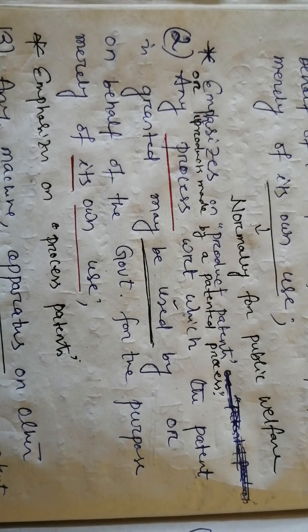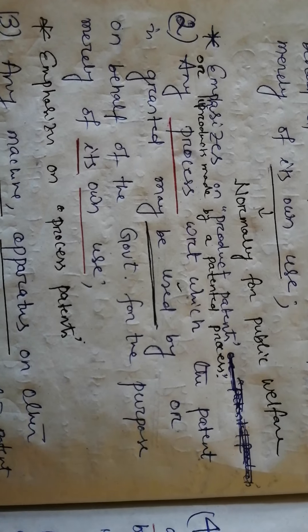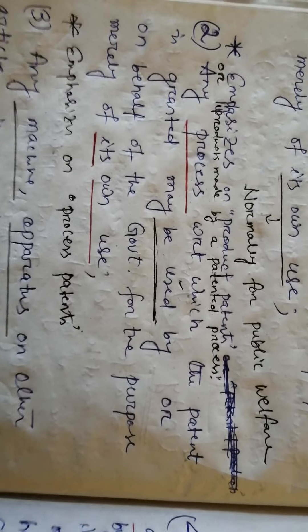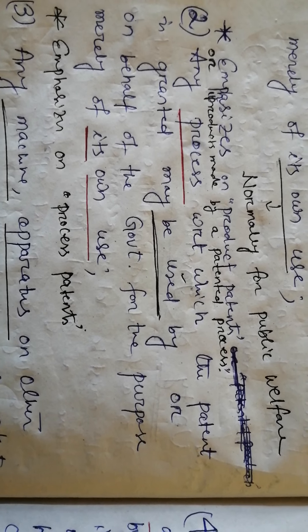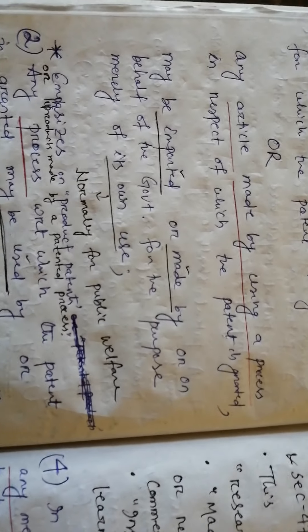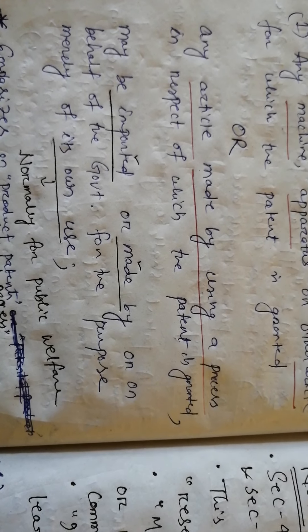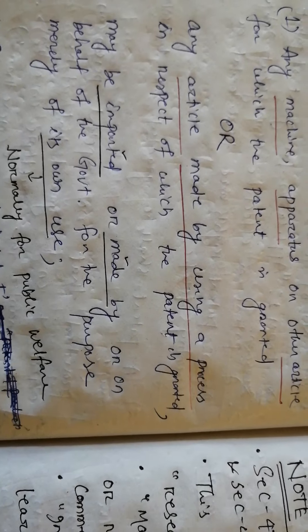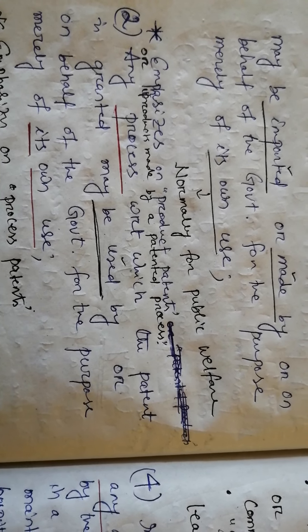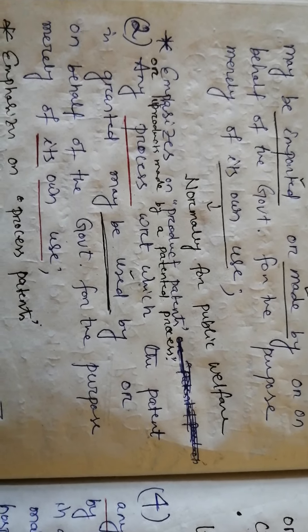Subsection 2: any process with respect to which the patent is granted may be used by or on behalf of the government for the purpose merely of its own use. This emphasizes process patents only. When you compare subsection 1 and 2, in subsection 1 the words 'imported or made' were used, but here in subsection 2 it is only 'may be used by.'